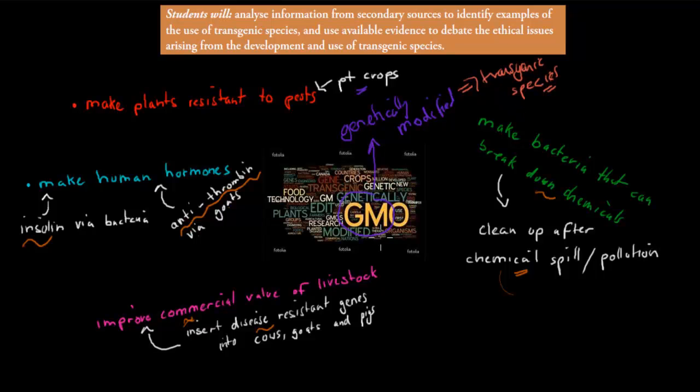And what we're going to do in this video is we're going to cover some of the ethical issues. So is it right, is it wrong to make these foods? What could be the discussion points for or against these different issues? And that's what we're going to discuss in this video. So the dot point itself says, analyze information from secondary sources to identify examples of the use of transgenic species, which is what I've done here. This is the uses of transgenic species, and use available evidence to debate the ethical issues arising from the development and use of transgenic species. So this is what we're going to do now.